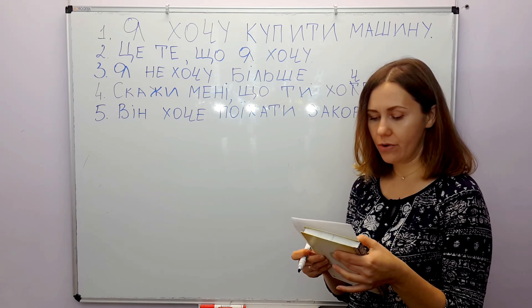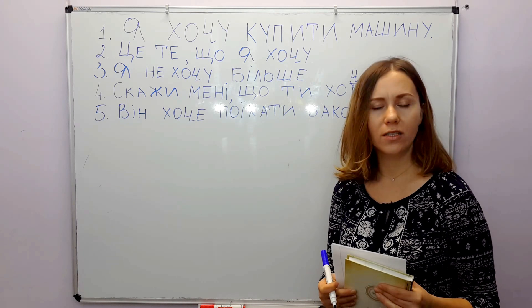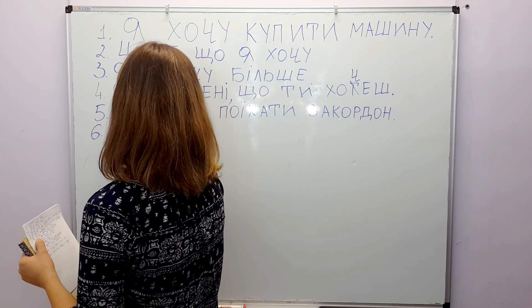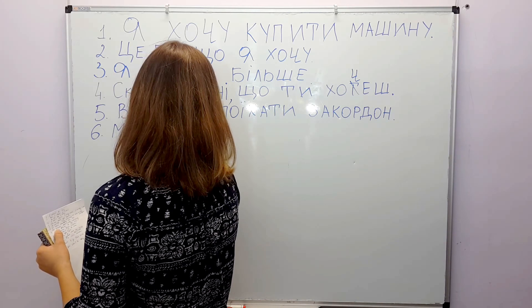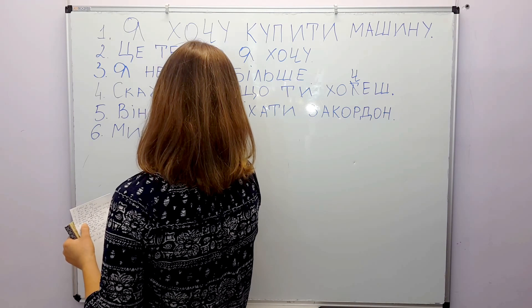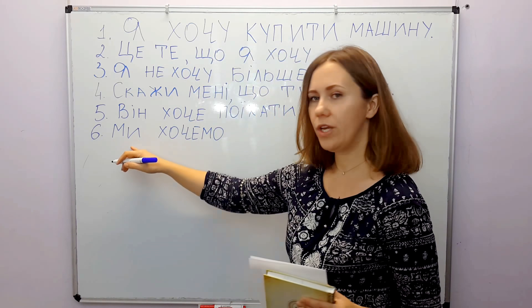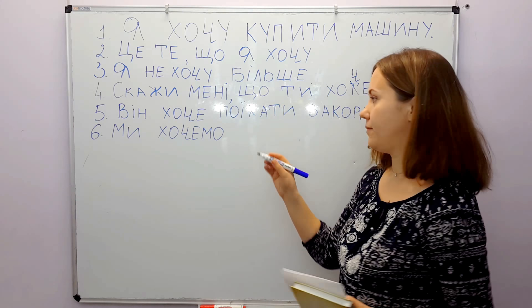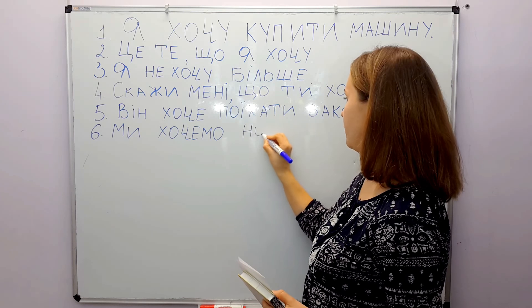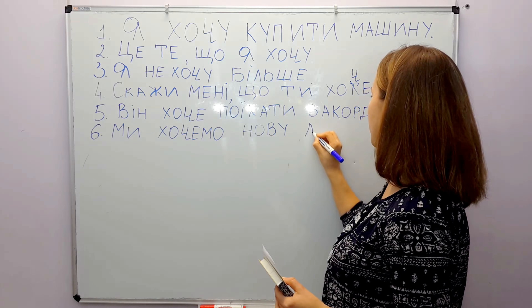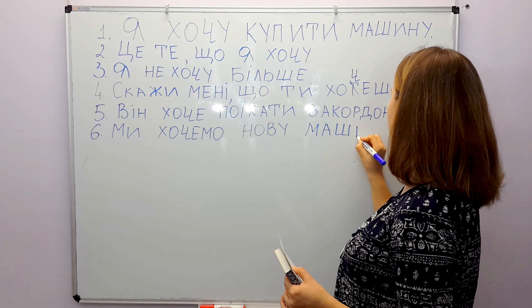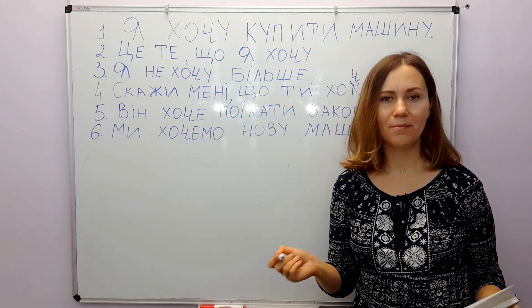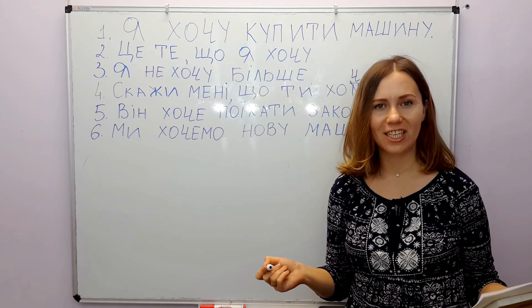We want a new car. We — ми. Want — хочемо, for 'we'. Ми хочемо — we want what? Нову машину — a new car. Ми хочемо нову машину.